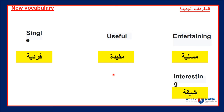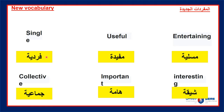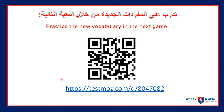شَيِّقَ — interesting. هَام — important. And the opposite of فَرْدِيه is جَمَاعِيَّ — it's a group, team, or collaborative game. Go to this link and practice the new vocabulary, repeating as many times as you need using your self-assessment until you are ready to move to the next step.